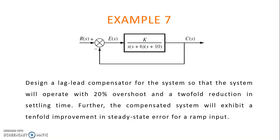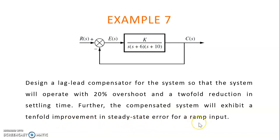For this question, we need to design a lag-lead compensator for the system so that the system will operate with 20% overshoot and a 2-fold reduction in settling time. Further, the compensated system will exhibit a 10-fold improvement in steady state error for a ramp input. The ramp input indicates that this is a type 1 system.